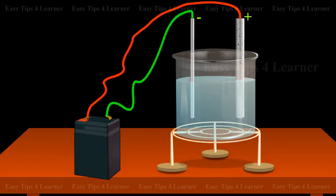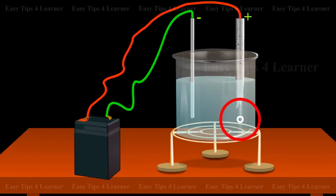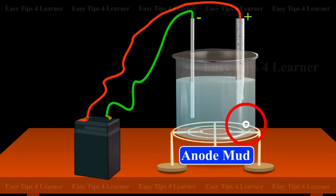The metallic impurities which are more electropositive than lead, such as iron and tin, go into the solution, while the rest of the impurities are thrown down as anode mud.